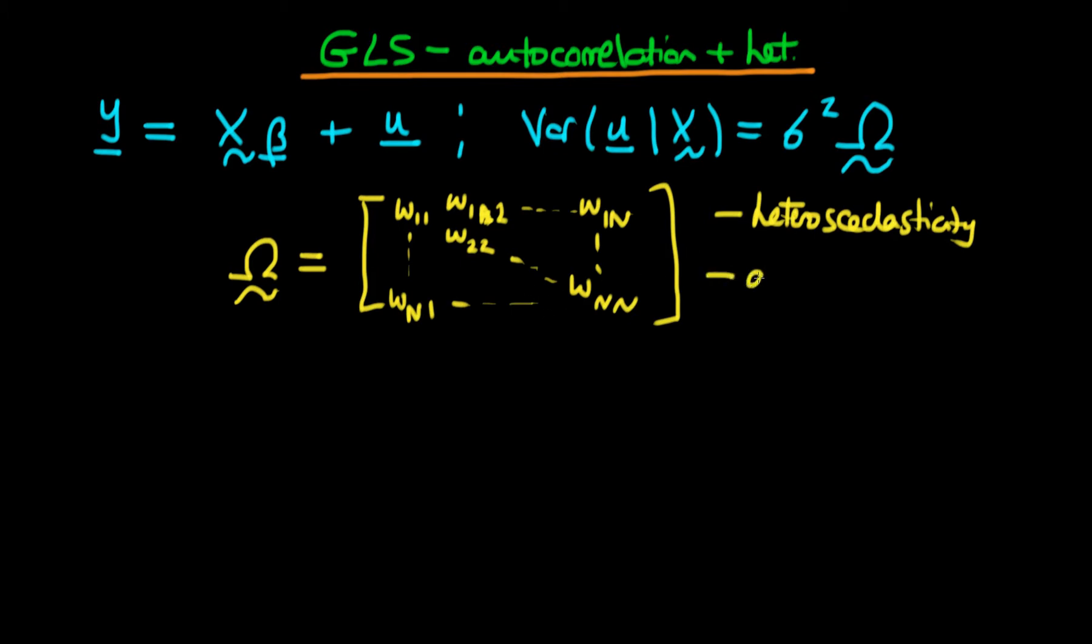And also here we have autocorrelation amongst errors. Because we have got off diagonal components and, for example, this first off diagonal component, omega 1 2, represents the covariance between U1 and U2.